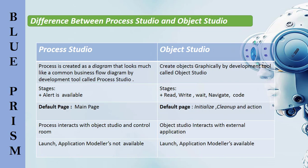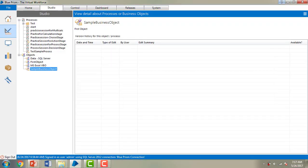In Process Studio, launch and application modelers are not available. Whereas in Object Studio, launch and application modelers are available. Let me switch to Blue Prism Virtual Workforce and open one of the processes from Process Studio and a sample business object from Object Studio.